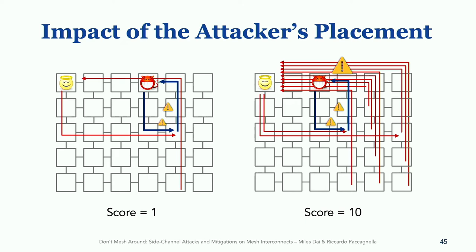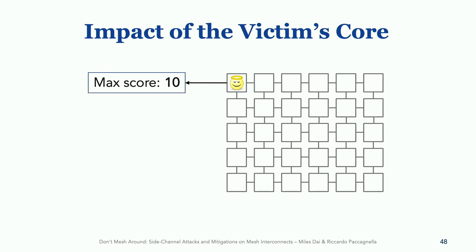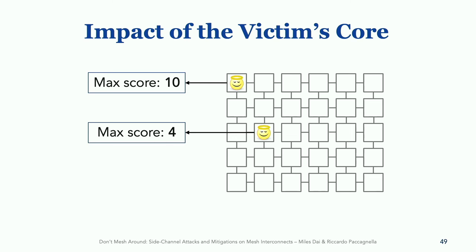The reason we showed all this was to introduce the mitigations part of this talk. As we saw, when the victim runs on the top left corner, there is a placement where the attacker can achieve a score of 10 — so this is not a very good core for the victim to pick. However, if we choose another victim core, for example the second column, third row, the maximum score the attacker can achieve is much lower: four.